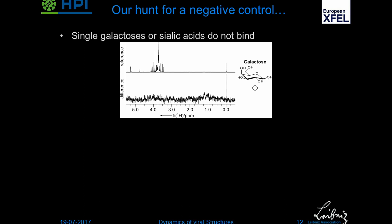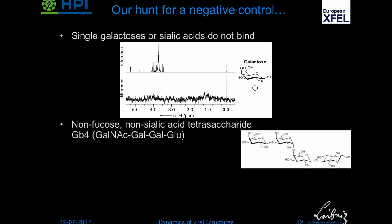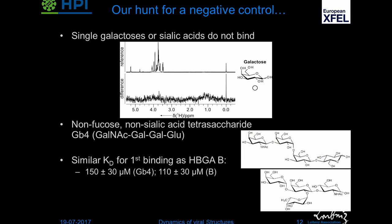We thought: let's go to a larger galactose sugar to have a proper negative control. So we went to the Gb4 antigen, which contains N-acetylgalactosamine, galactose, and glucose, and shouldn't bind. Surprisingly, it has a very similar KD for the first binding event as the B antigen — around 100 micromolar. We've tested other things and it seems like almost anything that has at least three sugars in a row or branched can bind.